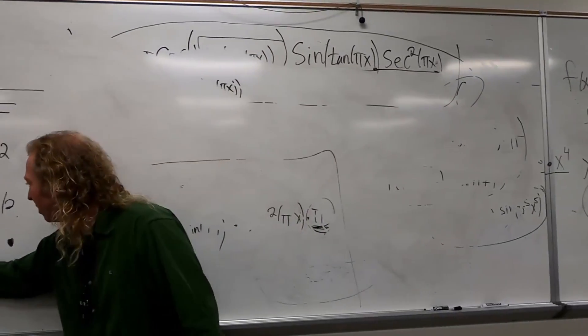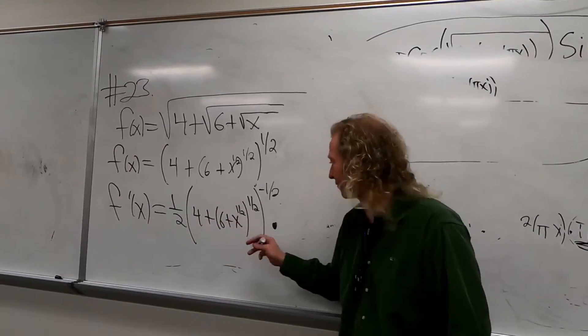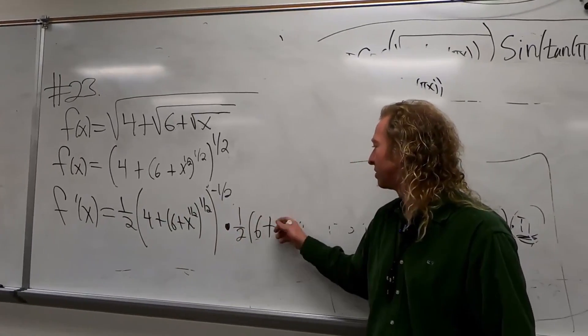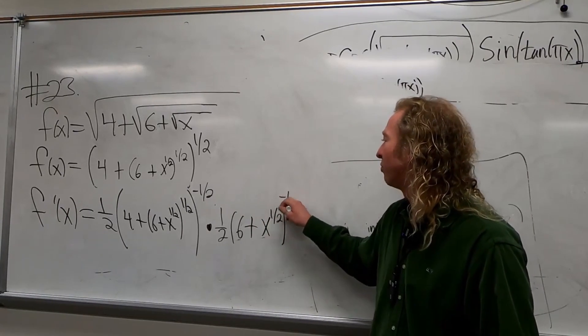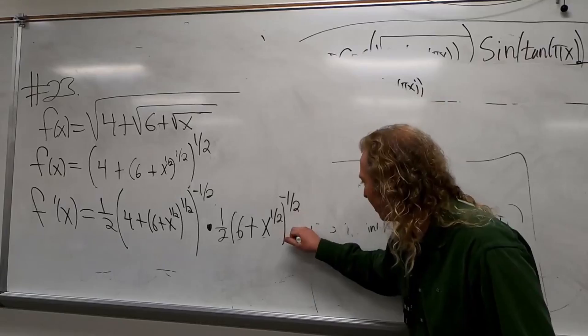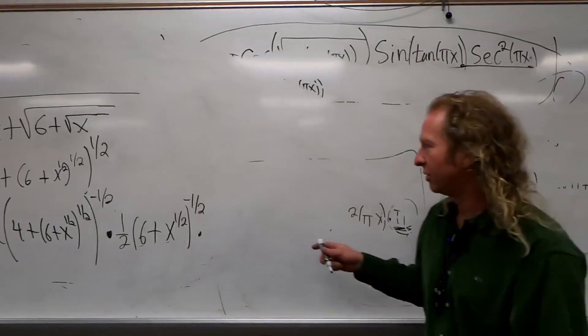So this is zero. So in this one there's another chain rule, right? So one-half, six plus x to the one-half, to the negative one-half, times, so let's see. So one-half, leave the inside untouched, negative one-half, take this derivative.